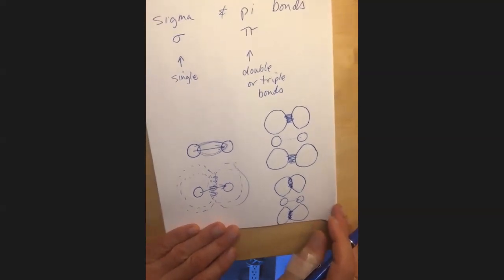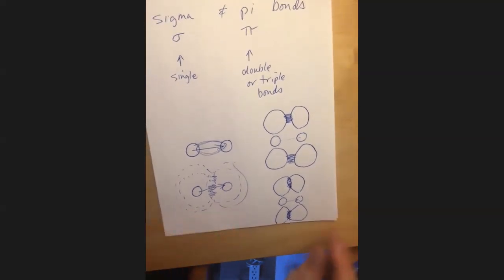Okay, so the sigma bond is a straightforward, like you said, the most basic overlapping of orbitals. Yeah. But then the pi bond is, in your example, with the p orbitals, and it's not as straightforward. Yeah.